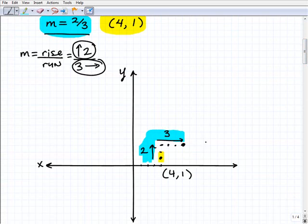So if this was four, this is going to be three more, so it'll be seven. And if this was one, and we went up two, this would be three. So we have our second point right there.